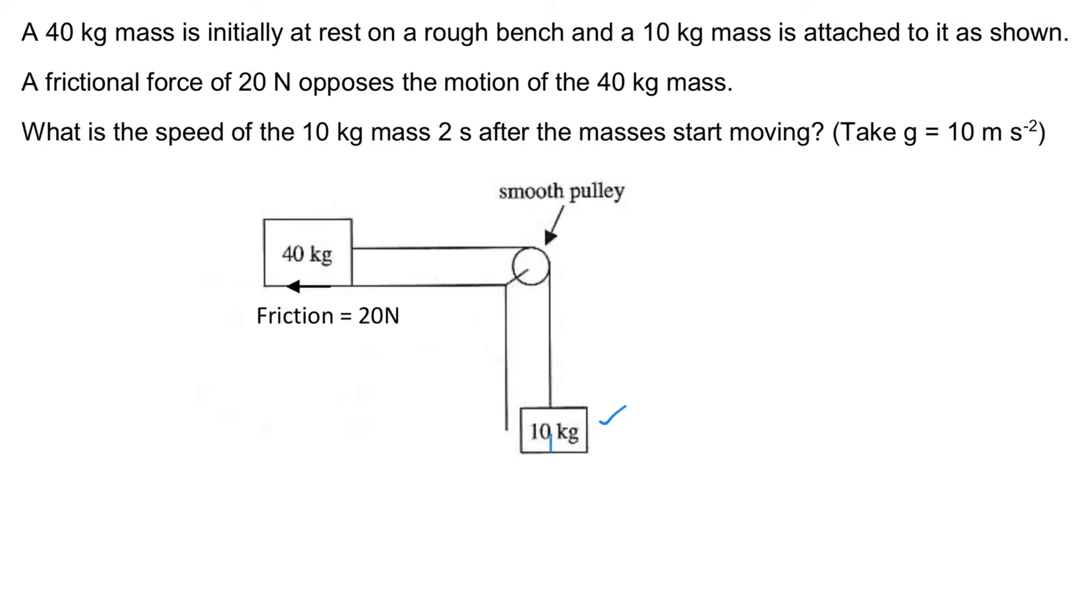First, let's find the weight. W equals mg: 10 kg mass times 10 gravitational field strength gives 100 Newton acting downwards.